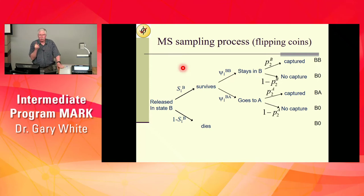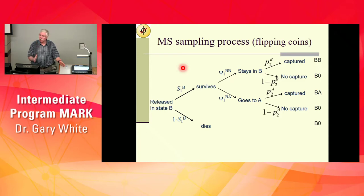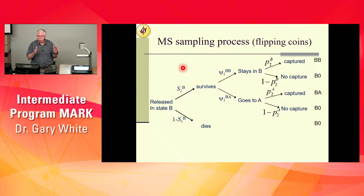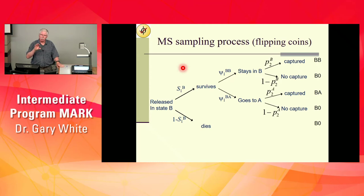Two key points: whatever state you're in right now determines your survival rate until the next interval. Just before we sample, you can transition. Transitions can only occur at that point because if they occur during the interval, say from A to B, your survival rate becomes a mixture of A and B and the survival rates are no longer identifiable.